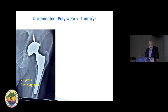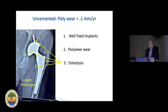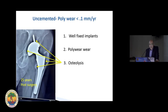Here you have a case 25 years post uncemented hip replacement. What do you see? The implants are well fixed. You can see the poly wear because the head has migrated superiorly, and you see osteolysis in the uncemented cup. The osteolysis occurs behind the cup because the particles enter through the holes in the cup and along the proximal femur.